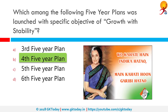There were two main objectives of this plan: growth with stability, and progressive achievement of self-reliance. During this plan, the slogan of 'Garibi Hatao' was given during the 1971 elections by Indira Gandhi. The plan failed and could achieve a growth rate of only 3.3 percent against the target of 5.7 percent.